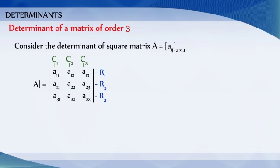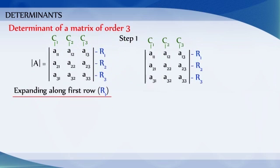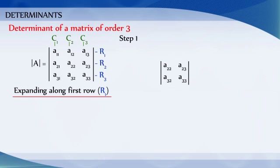Now let us see how we find the value of this determinant by expanding it along the first row R1. Consider the element a11. a11 belongs to the first row and first column of the given determinant A. Delete the first row and first column of the determinant A and evaluate the value of the determinant obtained, that is the determinant of [a22, a23; a32, a33].